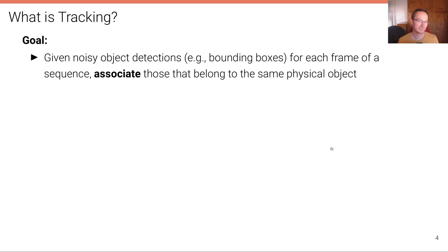What is tracking? The goal of tracking is that given noisy object detections, for example, represented in terms of 2D or 3D bounding boxes for each frame of a sequence, we want to associate those that belong to the same physical object. Furthermore, we want to reject detections that are false alarms. If we have an object detector, it's going to make mistakes and it will predict false positives. But of course, we don't want to integrate these false positives into our object tracks. So we want to have a mechanism to reject those.